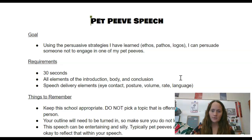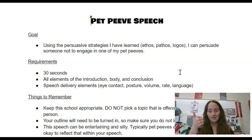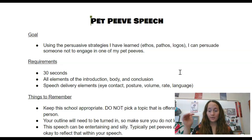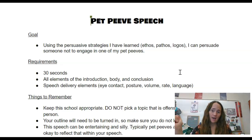Just as a reminder, you want to be incorporating the three different persuasive strategies we've talked about in class: ethos, pathos, and logos. Just as a refresher — logos means you're relying on logic to persuade. So this is where you give logical reasons, evidence, and examples that support reasons why people should not engage in the pet peeve behavior you're addressing.